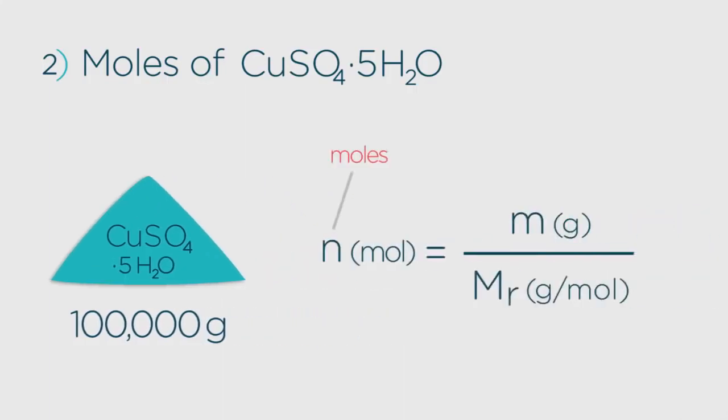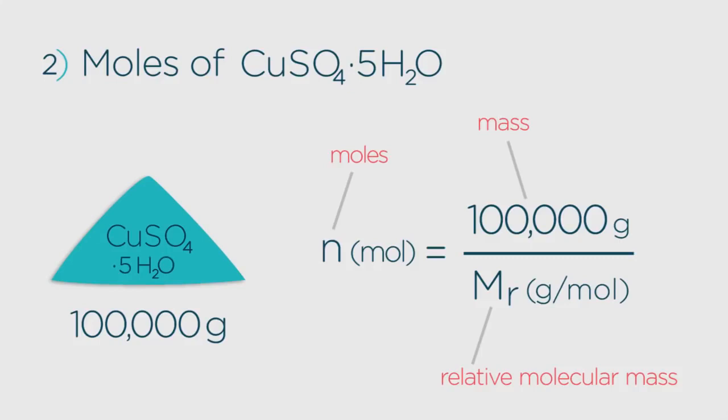The number of moles needed equals the desired mass, 100,000 grams, divided by the relative molecular mass of the product we want, copper sulfate.